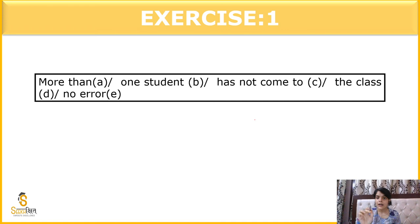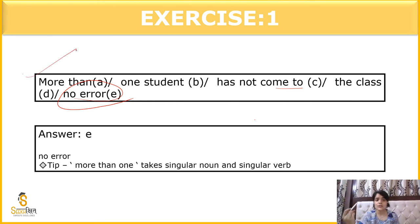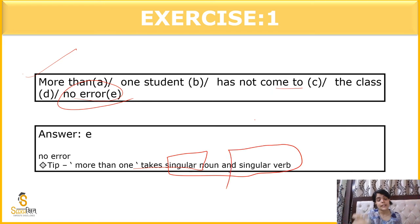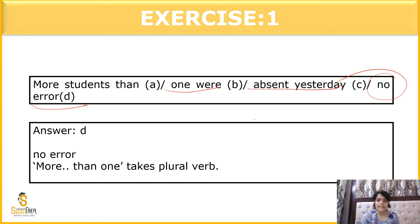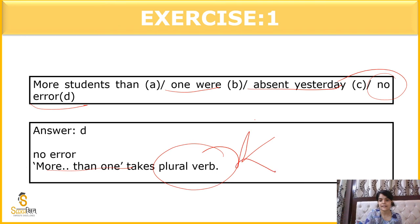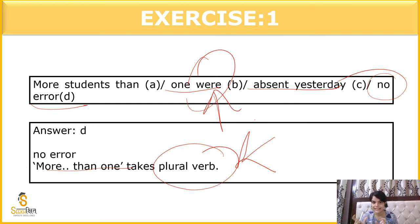Question 7: 'More than one student has not come to the class.' No error — 'more than one' takes a singular noun and singular verb; that is a golden rule. Question 8: 'More students than one were absent yesterday.' No error — here 'more students than one' acts as plural, so 'were' is correct. Subject-verb agreement requires that the subject always agrees with the verb for our statements to be correct.